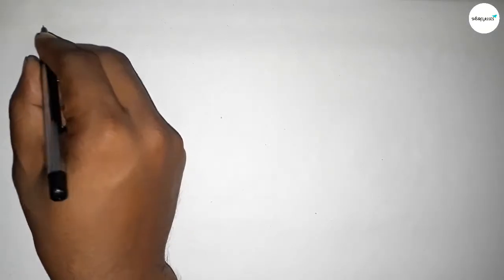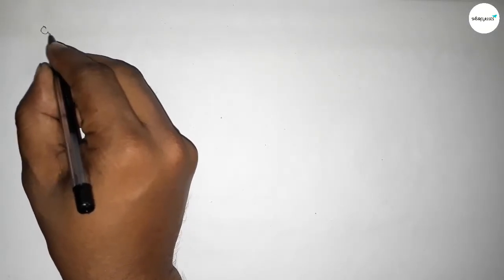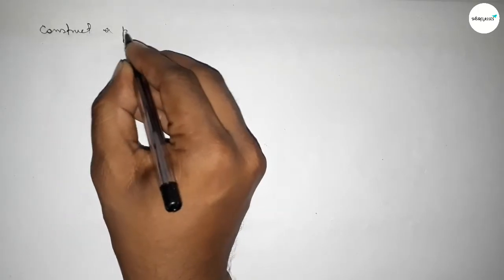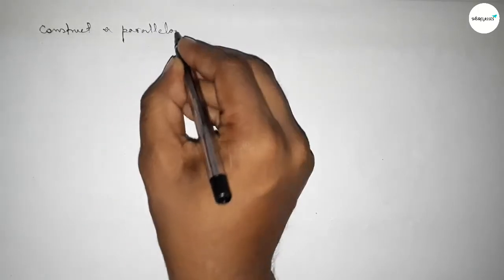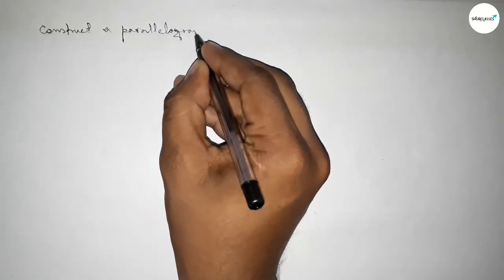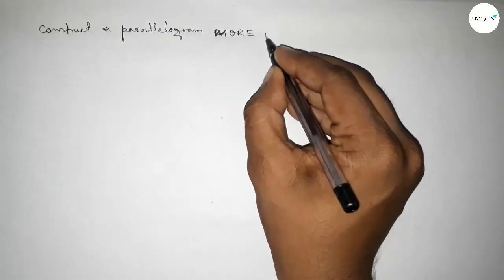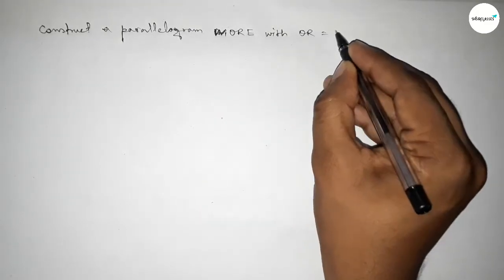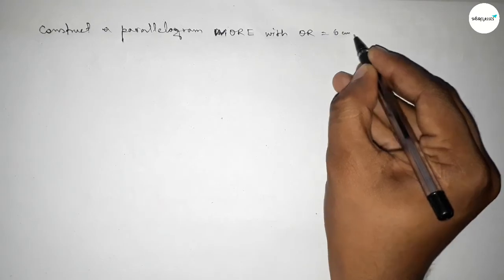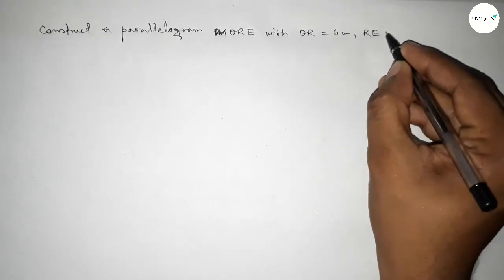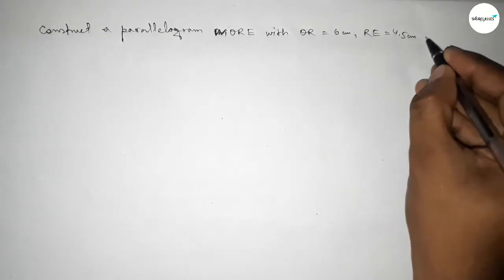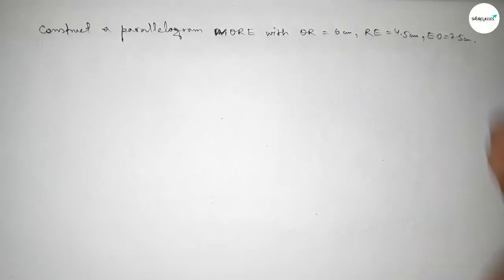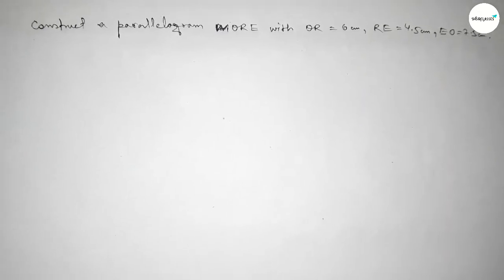Hi everyone, welcome to SI Share Classes. Today in this video we have to construct a parallelogram MORE with OR equal to 6 centimeters, ER equal to 4.5 centimeters, and EO equal to 7.5 centimeters. So let's start the video.